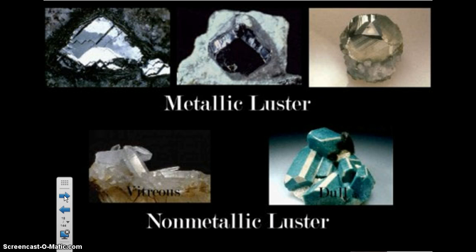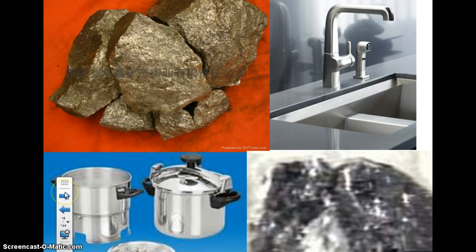Metallic — look at those ones on the top. Those are all minerals that are metallic; in other words, they shine like a metal. On the bottom, those are some examples of nonmetallic. The one on the left we refer to as vitreous — you do not need to know that word, but you do need to know the difference between metallic and nonmetallic. Dull is another example of nonmetallic. This one on the top left is pyrite — it is certainly a metallic mineral because it shines like a metal.